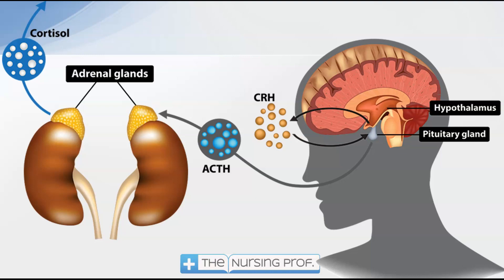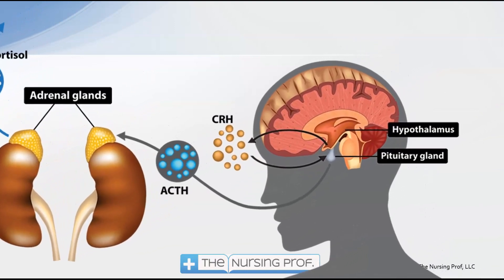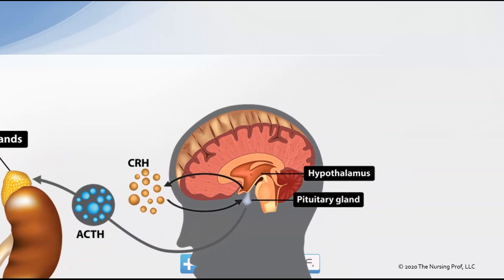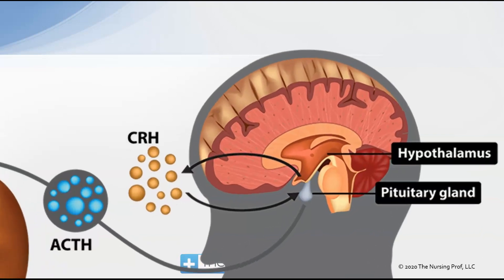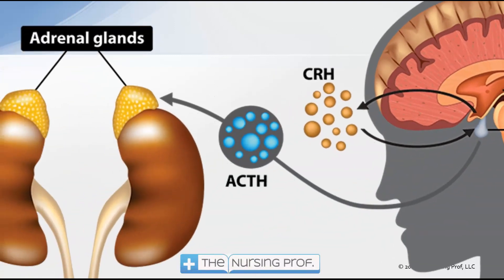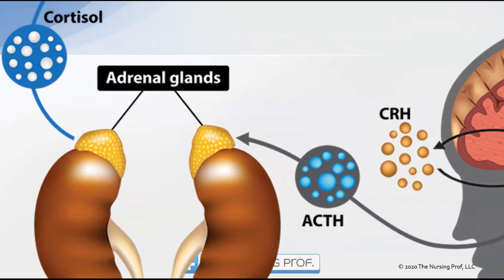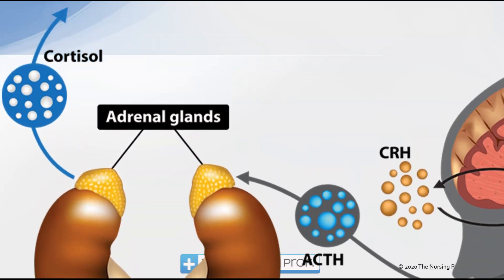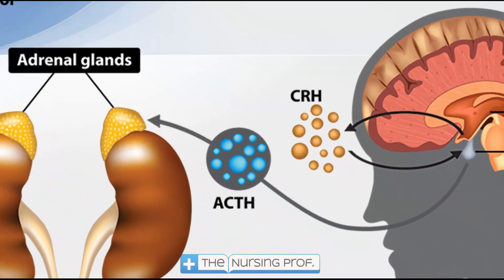When talking about adrenal insufficiency, it helps to know what is going on with the hormones. Beginning with the cortisol we eventually want to see secreted, we have to start up in the brain in the hypothalamus and the pituitary. The hypothalamus signals the pituitary to release cortisol-regulating hormone, which then stimulates the pituitary to release ACTH, stimulating the adrenal glands. Once the adrenal glands are stimulated, cortisol will be released. This is the process we expect in order to develop cortisol and maintain our bodily functions.